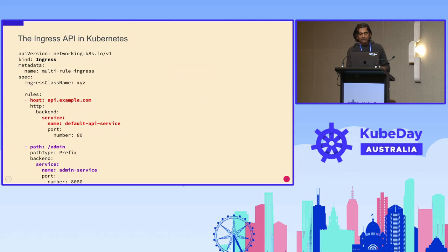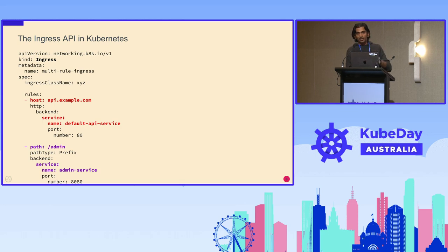If you look at a sample Ingress configuration, it will be something like this. You basically provide the kind Ingress, then add different rules, define your paths, and the actual services that you need to route requests to. If you look at this configuration, it's just one flat file where you have server-level configuration as well as route details. Every time you need to add a new service or new route, you have to modify this configuration and deploy.